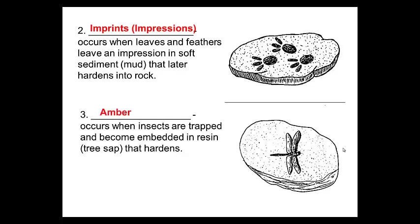Number three: amber. Think of Jurassic Park. Occurs when insects are trapped and become embedded in resin or tree sap that hardens. If you've seen the movie Jurassic Park, there was a little fly inside the amber and that's where they extracted the dinosaur DNA.